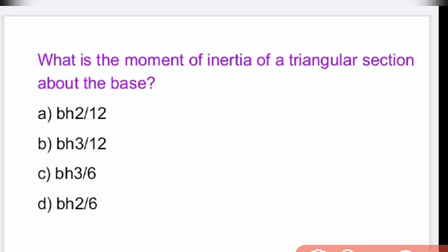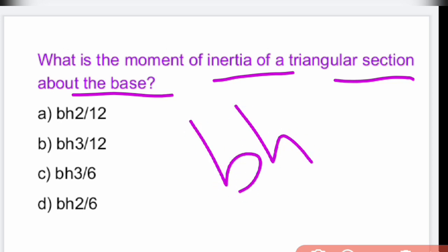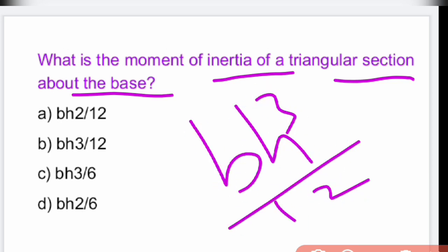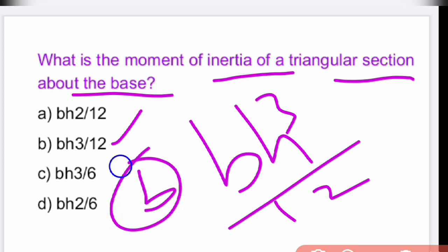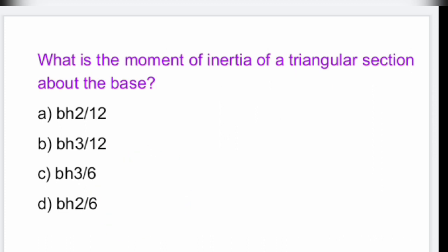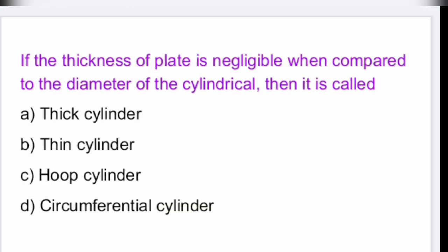The moment of inertia of a triangular section about the base is BH³/12, where B is breadth and H is height. Our answer is option B.